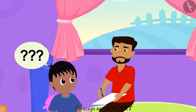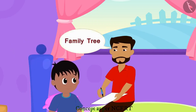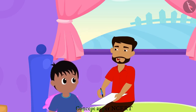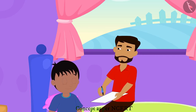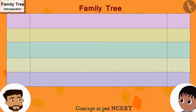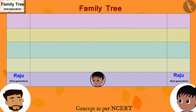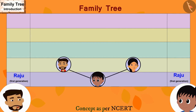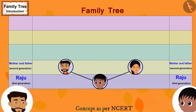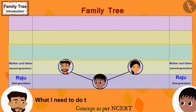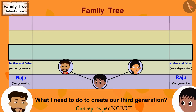What are you making, father? I am making our family tree. What's that, father? The family tree is a picture in which we depict all the relatives of our family. Look, Raju — first I will write your name here. This is our first generation. Now, I will draw two lines above your name and write your mother's name and my name. We are both in the second generation of this family.